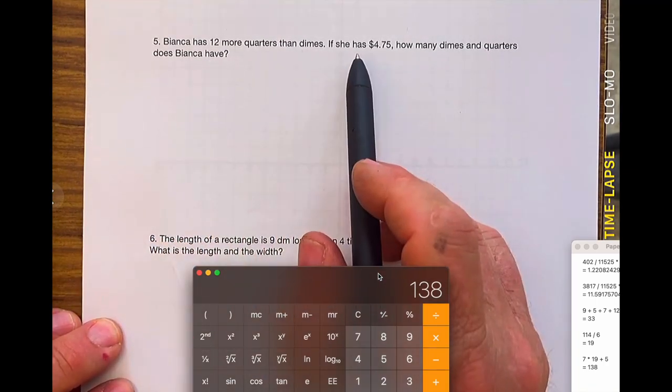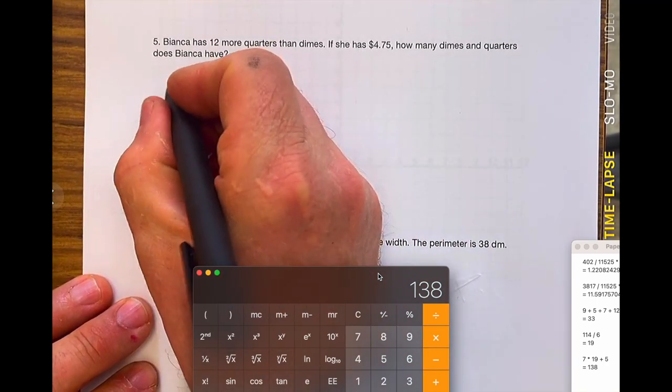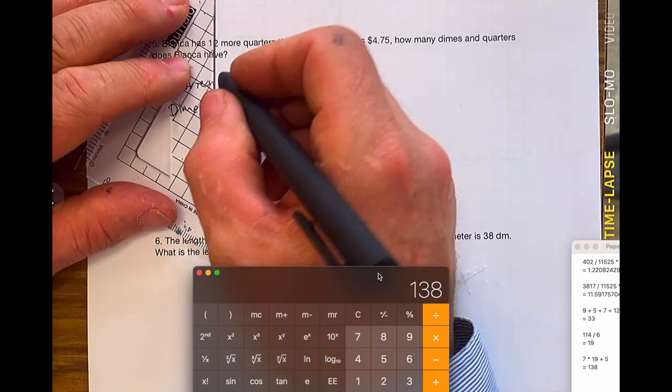Bianca has 12 more quarters than dimes. Quarters and dimes. I'm going to make a quick chart, a number value chart.